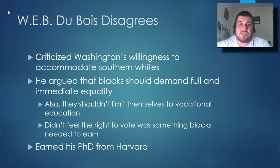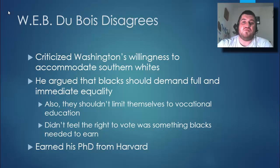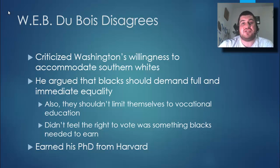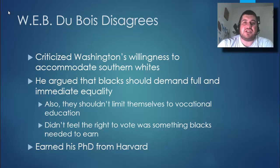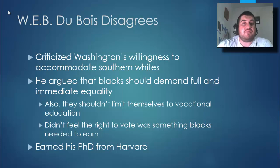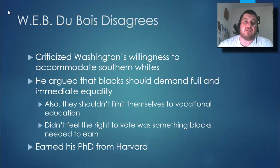W.E.B. Du Bois — both pronunciations are acceptable — criticized Washington's willingness to accommodate to segregation. He argued that blacks should not settle for anything less than full and immediate equality, and that they shouldn't limit themselves to just a vocational education. Du Bois earned his PhD from Harvard. He also felt that the right to vote was not something blacks needed to earn — it was their right, not something to be blocked by poll taxes, grandfather clauses, and literacy tests.